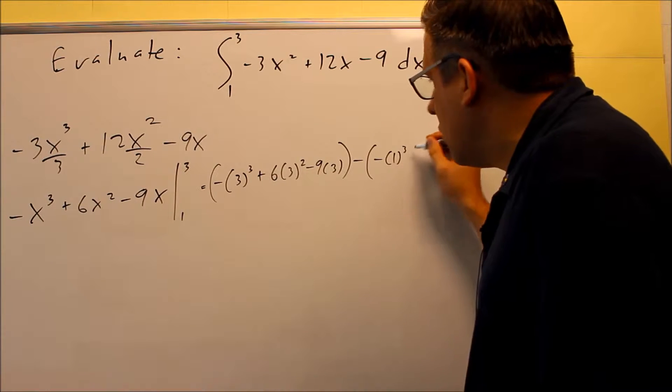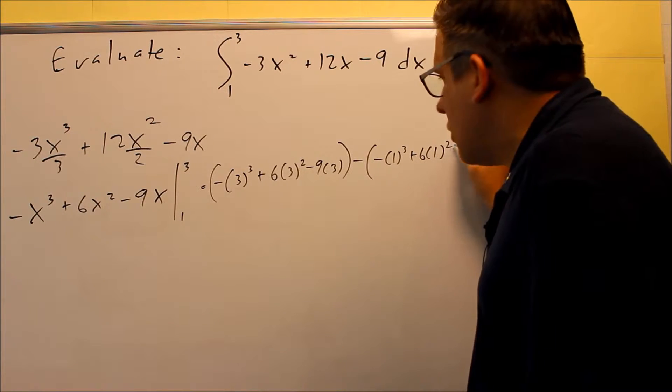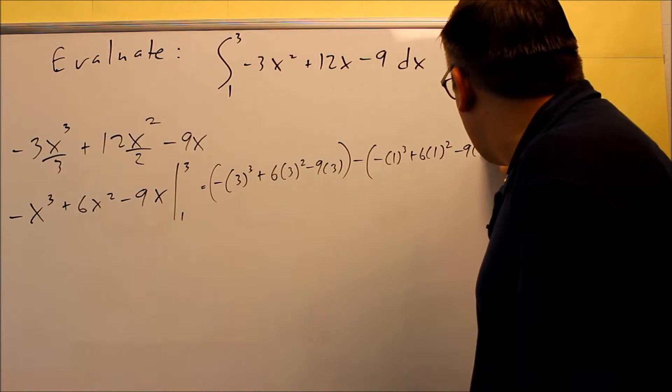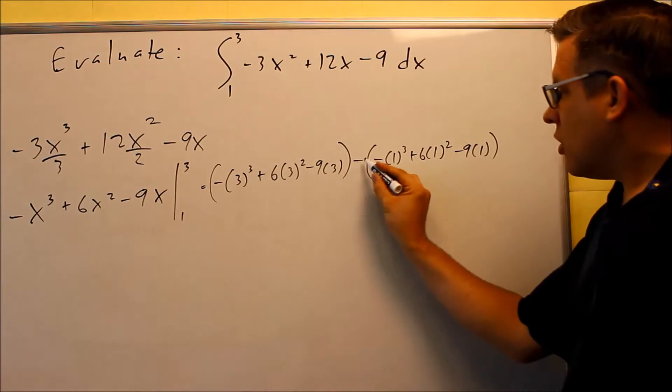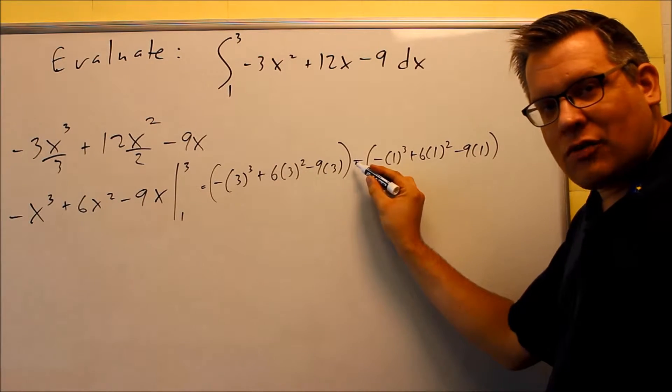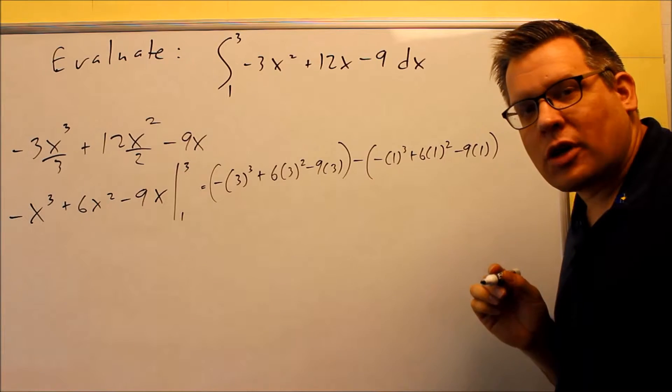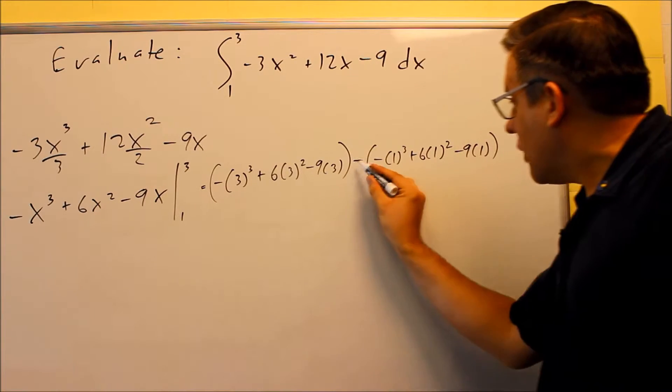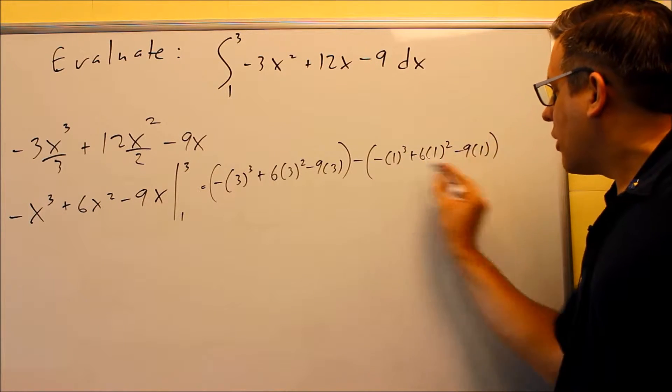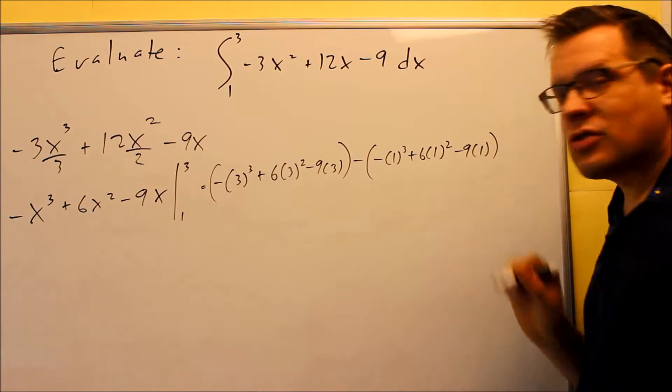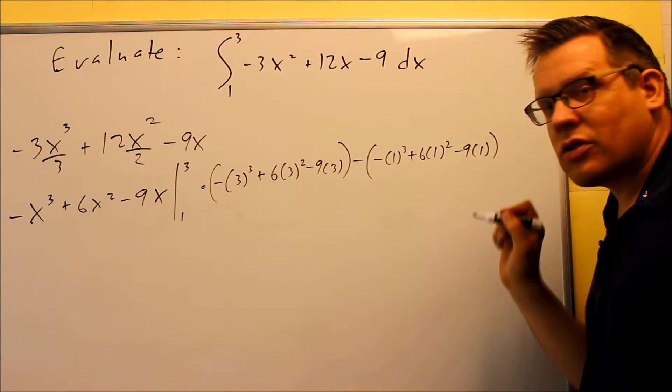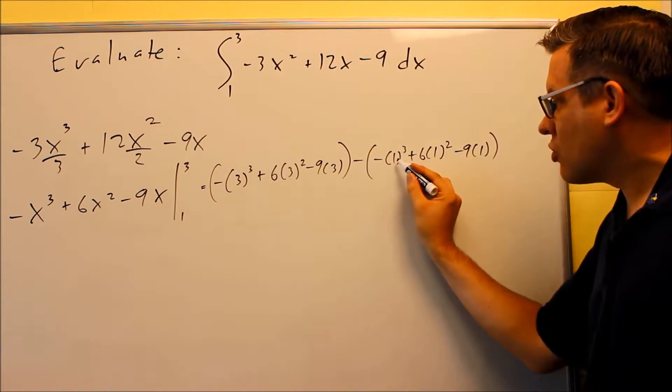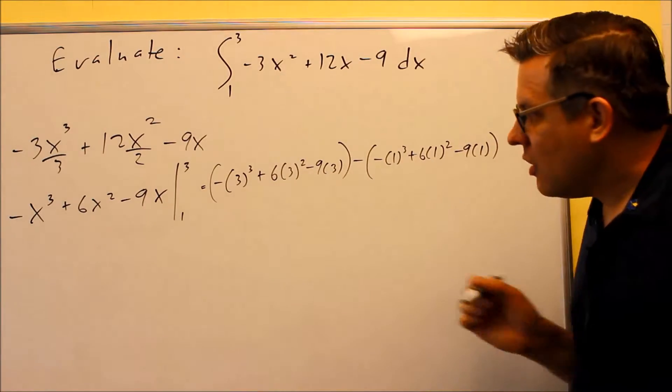So we have -1³, 6 times 1², 9 times 1. Don't forget that you've got to put a minus sign in front, because that's what the first fundamental theorem of calculus says. And the negative is subtracting the whole thing inside. That's why I'm putting this in parentheses, because if you didn't put parentheses, you might accidentally just subtract the first one and not all of them.